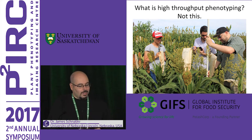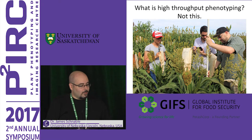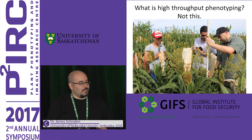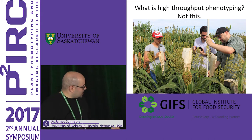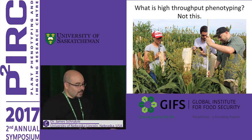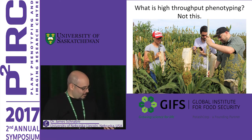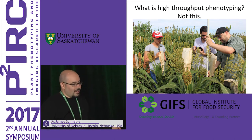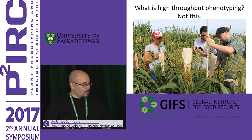In order to make high-throughput phenotyping work, there are three separate things that have to go right. The first is the technology to collect imaging or other remote sensing data. The second are the computational approaches that allow us to convert image data into numerical phenotypes. The third is using those numerical phenotypes to map genes or QTL, build genomic prediction models, and integrate that into a breeding program. The bottleneck within the bottleneck of phenotyping is really how we go from a bunch of photos or LiDAR data to something that will actually be predictive in a breeding program.